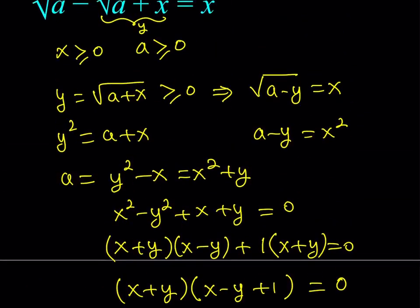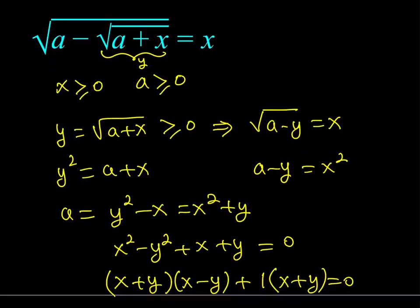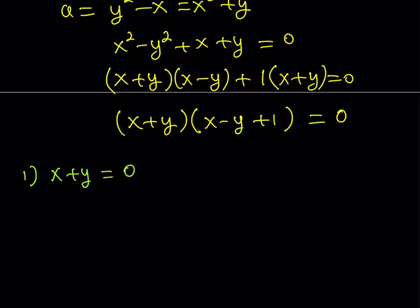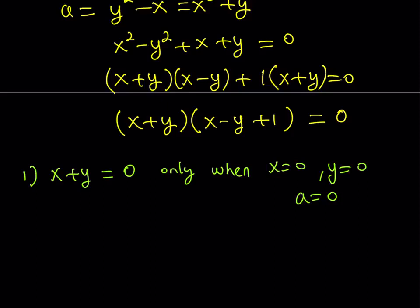If you consider the original expression, x is positive and y is positive — they're both non-negative quantities. So their sum can only be 0 when x is 0 and y is 0, which implies that a is 0. So basically, we do have 0 as a solution when a is equal to 0. At the end, we're going to write the solution as a piecewise function so you'll see everything together. We know that x equals 0 is a solution if a equals 0.